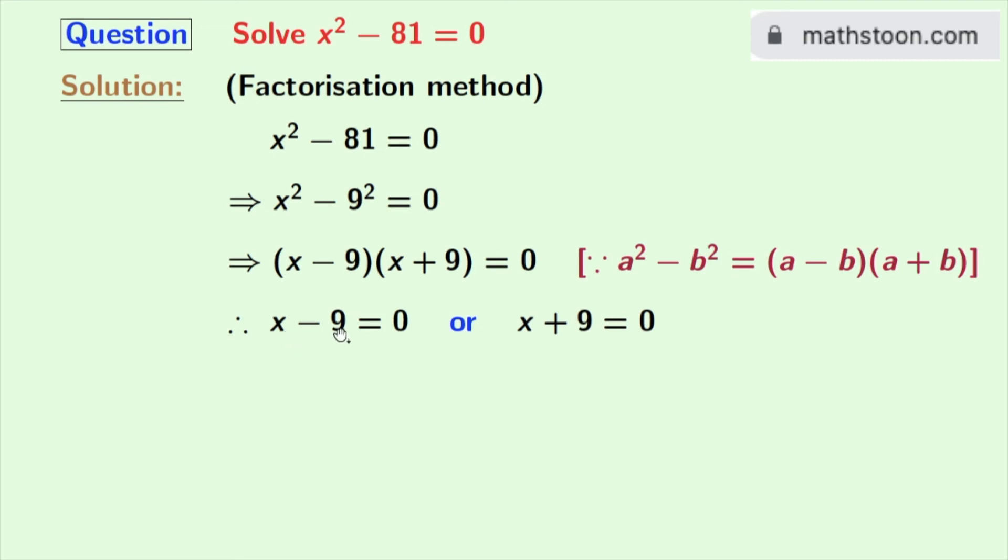If x minus 9 is 0, then we have x equals 9. And if x plus 9 is 0, then we have x equals minus 9.